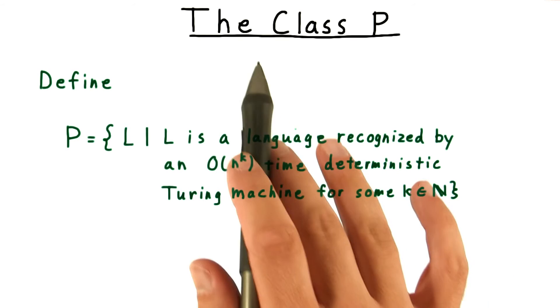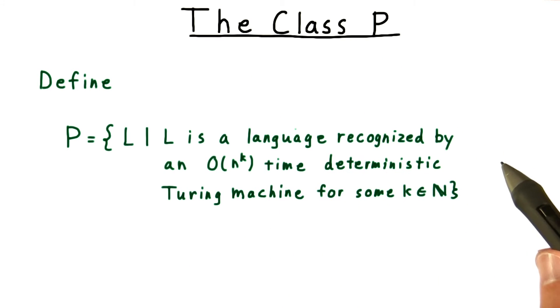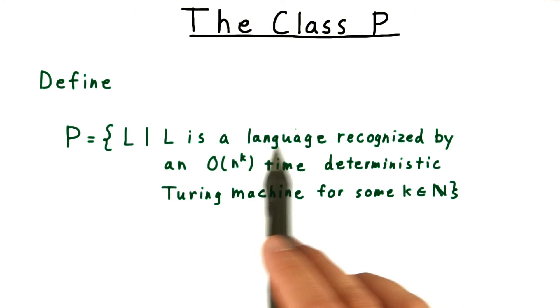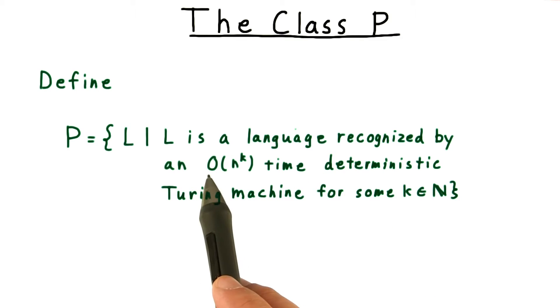We are now ready to formally define the class P. Most precisely, P is the set of languages recognized by an O(n^k) time deterministic Turing machine for some natural number k.